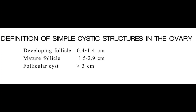When the follicle matures, its size becomes 1.5 to 2.9 centimeters — less than 3 centimeters is considered a mature follicle. If the size increases beyond 3 centimeters, it is considered a follicular cyst and falls into the category of a cystic lesion. Do not confuse clinicians or gynecologists by labeling follicles as cysts without knowing the size thresholds.